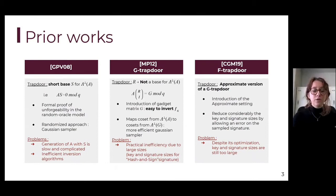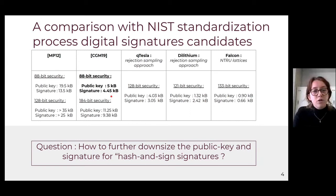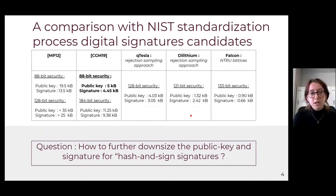To see this, we can compare with the NIST standardization process digital signature second-round candidates shown on the right. Even if we take the best parameter set, to have key sizes for 88-bit security in the F-trapdoor construction, the object sizes are about five kilobytes. However, for better security of at least 120-bit security, all NIST standardization process candidates have object sizes less than around four kilobytes. So we asked ourselves how we can further downsize the object sizes — especially the public key and signature sizes in hash-and-sign signatures.